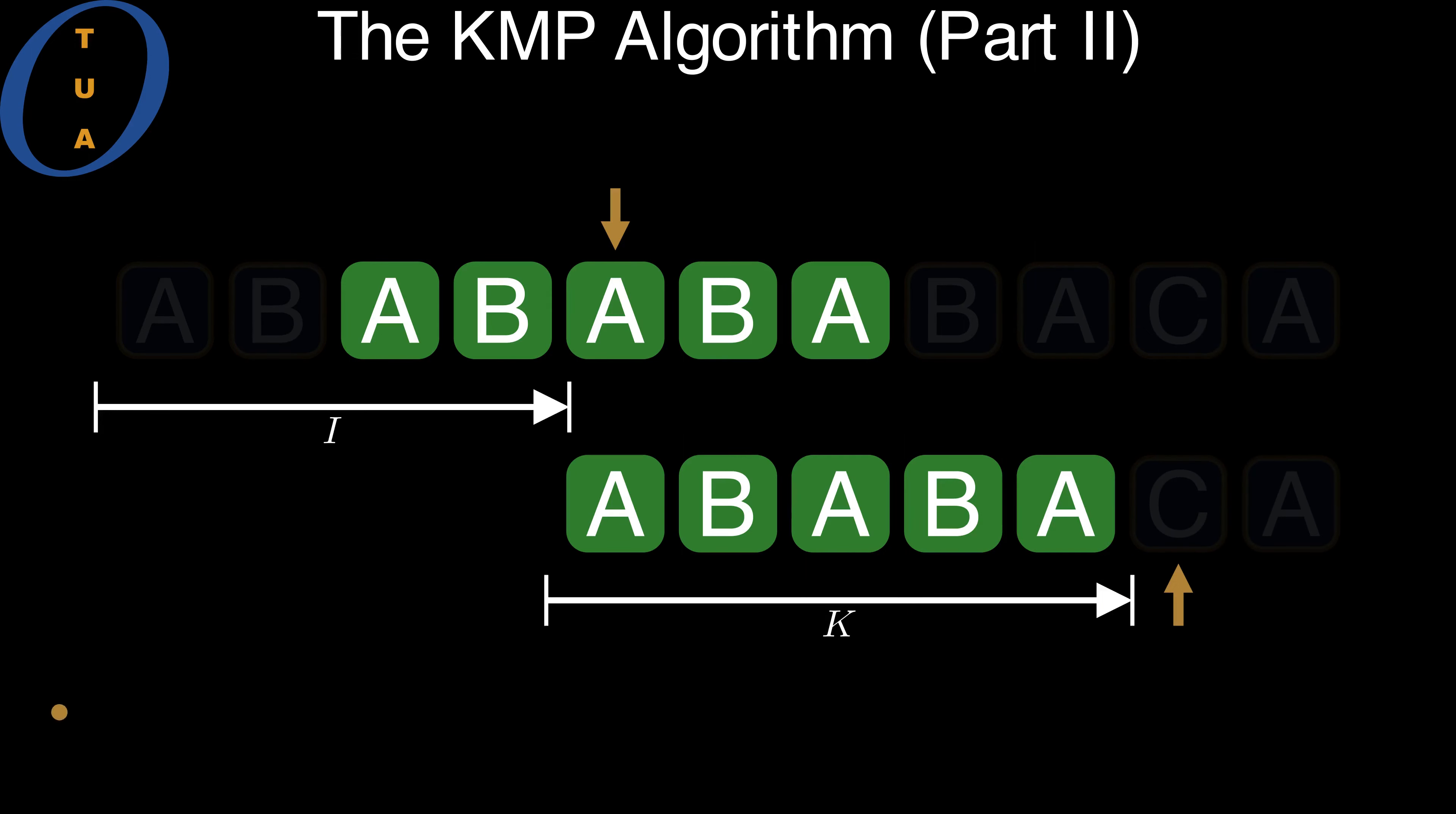This raises two questions. Why is this offset special? And how do we compute it as quickly as possible?